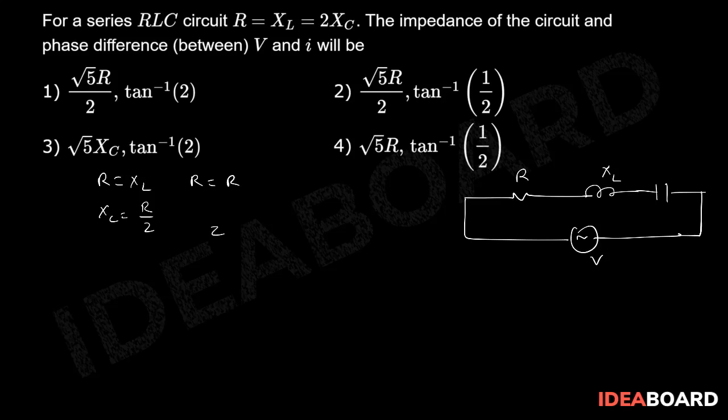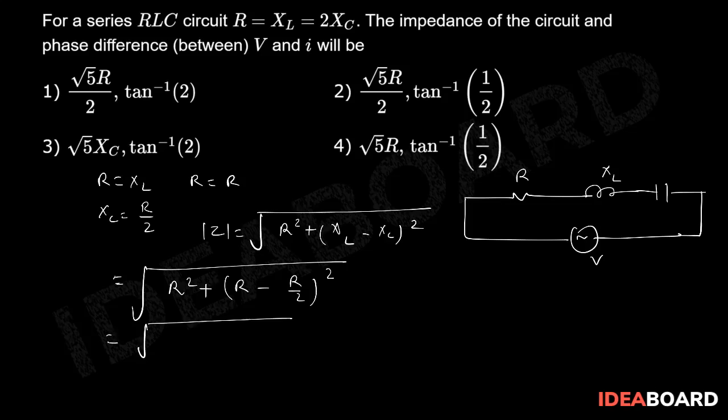So impedance Z, mod Z, is going to be under root of R square plus XL minus XC whole square. Now put the values, so under root R square plus what is the value of XL, so XL is R minus XC is R by 2 square. So which will give us R square plus this will be R by 2, this will become R square by 4, so this will become 5R square by 4 square root, which will be under root 5R by 2. So the impedance will be under root 5R by 2.